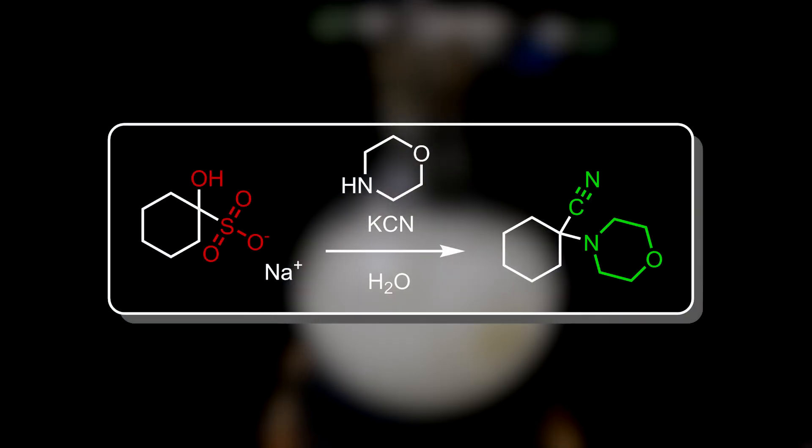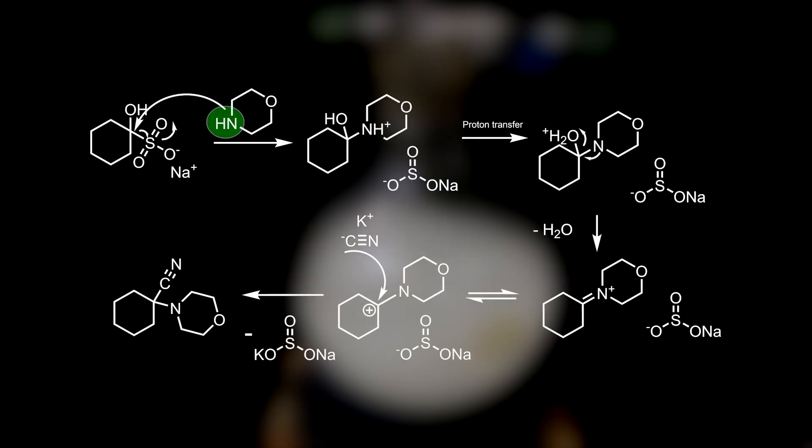In this reaction, the bisulfite adduct of cyclohexanone can react with morpholine, and then cyanide, to form this cyanomorpholinocyclohexane. How it proceeds is first through nucleophilic attack of the amine from morpholine onto the adduct, kicking off the sulfite and forming this amino alcohol. Then, through proton transfer, this amino alcohol can eliminate water to form an aminium. The aminium can be described as an equilibrium of these two structures. The cyanide ion can then attack the aminium carbon, to give this cyano compound and sodium potassium sulfite.